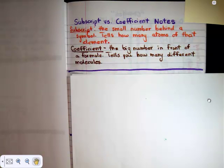Subscripts are the small number behind a symbol and tell you how many atoms of that element there are. One way to think about it is the word sub means under, so a subscript is the small number that's under each symbol. If there's no subscript, we just assume there's one of that element.